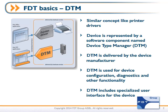Let's start with some of the basics of the FDT standard. The first part is called the DTM, or Device Type Manager. This is similar in concept to a driver for a printer in a Windows application. The device in the factory automation environment is represented by this DTM component. The DTM is typically delivered by the device manufacturer, and it's used for configuration, diagnostics, asset management, calibration, and a host of other functionality. The DTM includes a very rich graphical interface that allows the device manufacturer to represent their product in the best light possible.